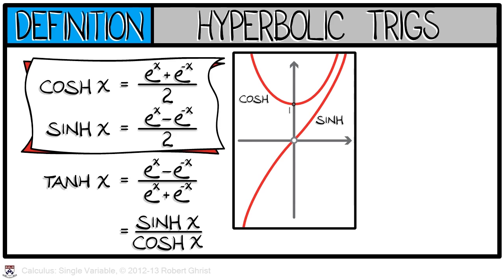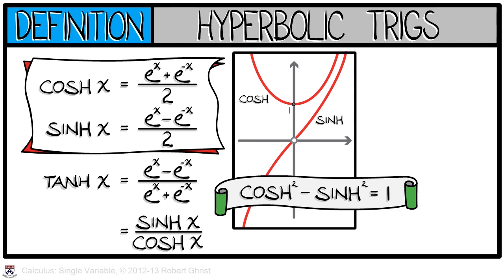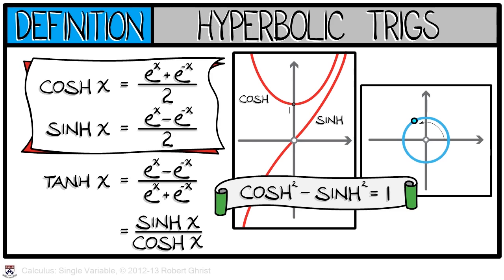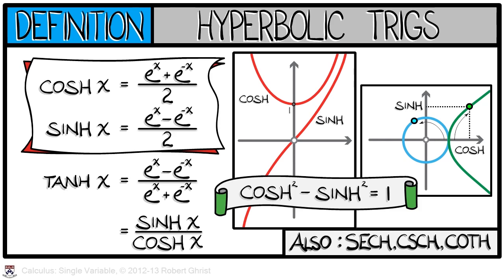Some of the rules familiar from trigonometry hold in this hyperbolic setting, but with a twist. For example, cosh squared of x minus sinh squared of x equals 1. Compare this with the familiar formula cosine squared plus sine squared equals 1. This relates to the unit circle: cosine is the x-coordinate, sine is the y-coordinate of a point on the unit circle. In the hyperbolic trigonometric setting, the same is true but for a hyperbola instead of a circle. There are also hyperbolic secant, cosecant, and cotangent functions.